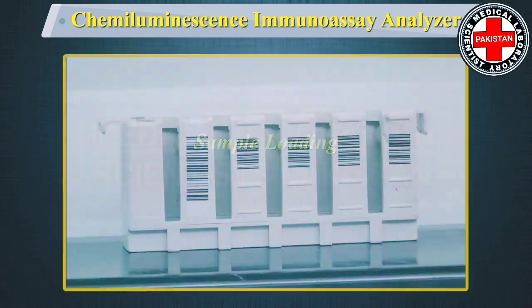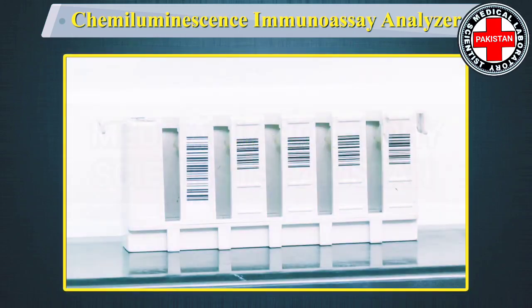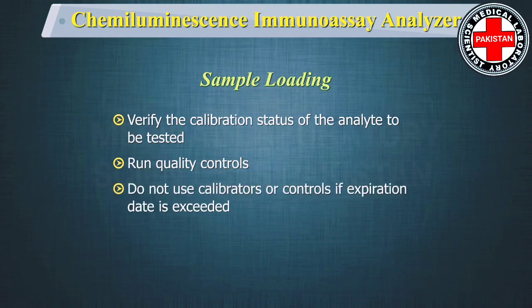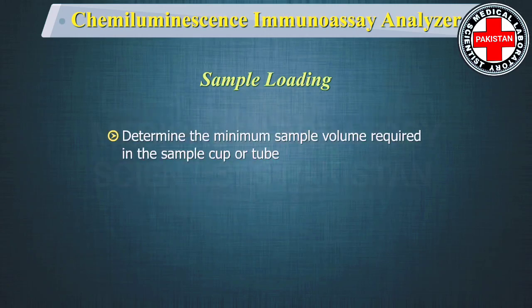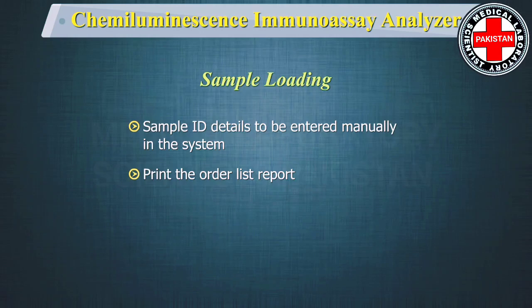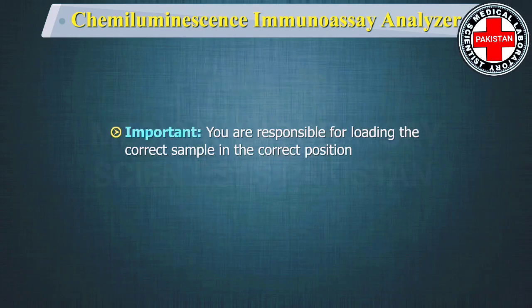Before loading test samples, verify the calibration status of the analyte to be tested. Also run quality controls. Do not use calibrators or controls if the expiration date is exceeded. Determine the minimum sample volume required in the sample cup or tube as described earlier. In a laboratory where the equipment is not connected to the lab information system, sample identification details have to be entered manually. Print the order list report to ensure that you load the samples in the correct carrier position.